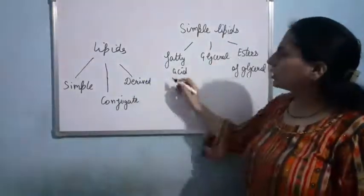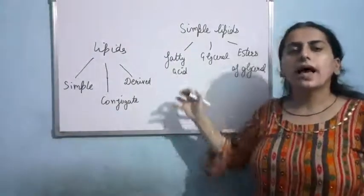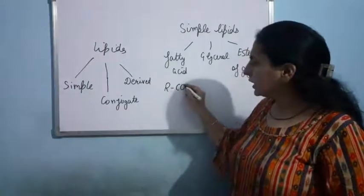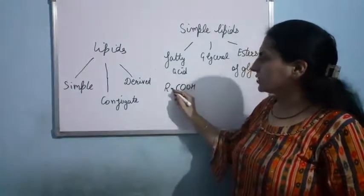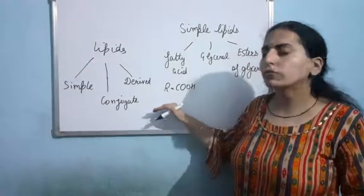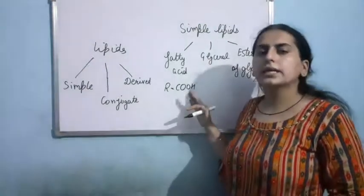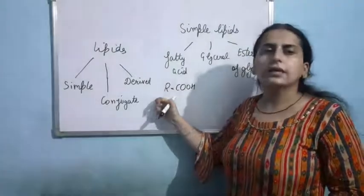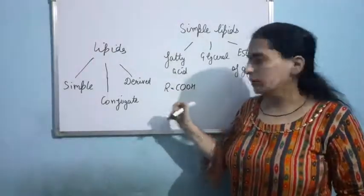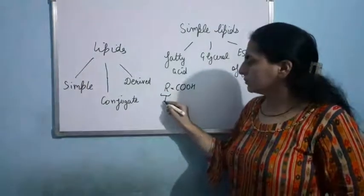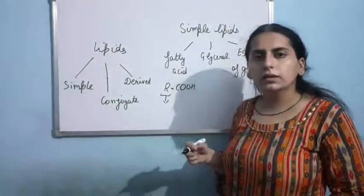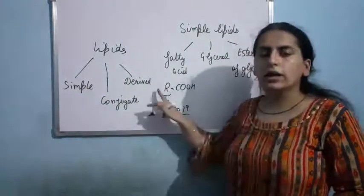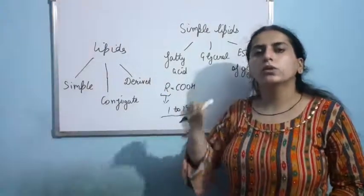If I talk about fatty acids, as you know they are having a general formula R-COOH. They have a carboxylic acid group that is being attached with the R group. Now this R group could have carbon from 1 to 19.